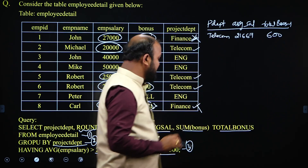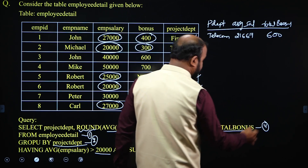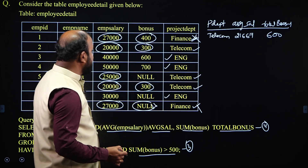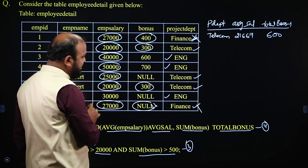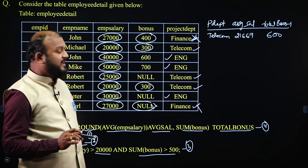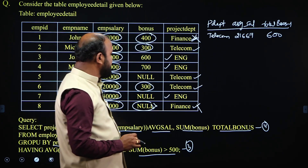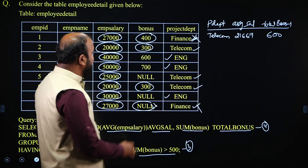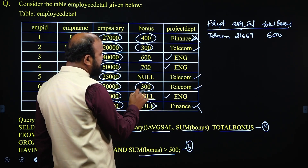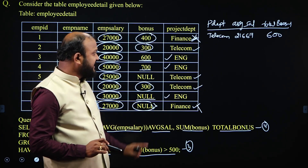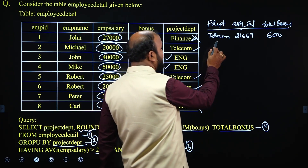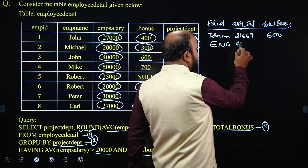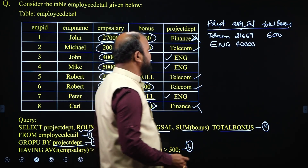For the ENG group, the salaries are 40,000, 50,000, 90,000 — wait, 30,000 and 120,000. The average is 40,000, which is greater than 20,000 — first condition true. Sum of bonuses: 600 plus 700, null is ignored, equals 1,300 — greater than 500 — correct. So the ENG group is also selected. The output for ENG is: department ENG, average EMP salary 40,000, and total bonus 1,300.